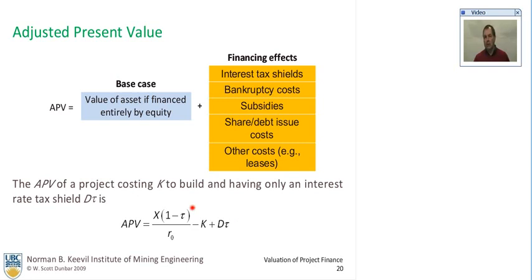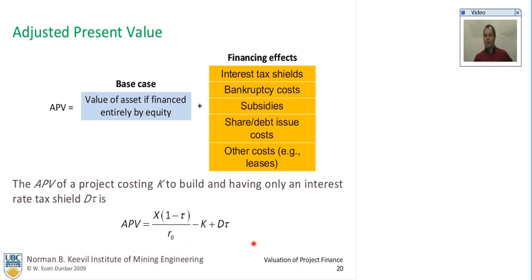You start off with the base case and add on these financing effects. So the adjusted present value of a project costing K to build, and having only an interest rate tax shield D·tau, is as shown here. It's the cash available to equity holders of an all-equity operation divided by R0, minus the capital cost of the project, plus the interest rate tax shield.